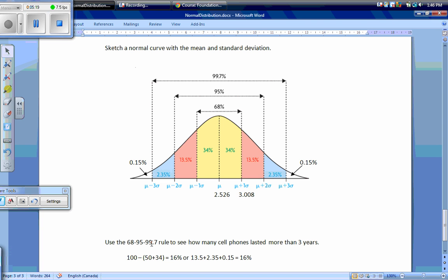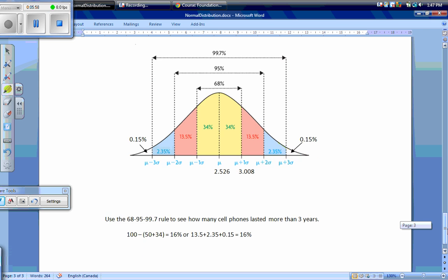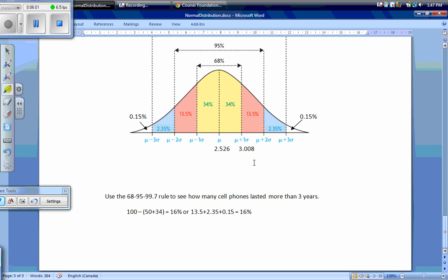I'm going to use the 68-95-99.7 rule to see how many cell phones lasted more than 3 years. I need greater than 3.008, all the way to the end. I can either say this whole thing has an area of 100%, and subtract this half plus 34%, which works out to 16% of cell phones. Or I can go 13.5% plus 2.35% plus 0.15%, which also works out to 16% of cell phones lasting longer than 3 years.